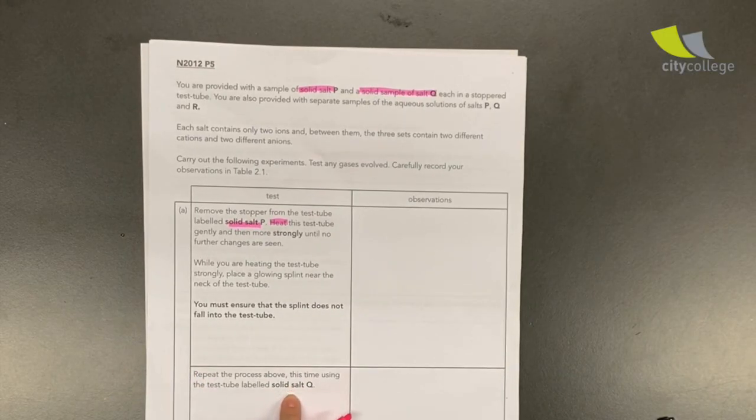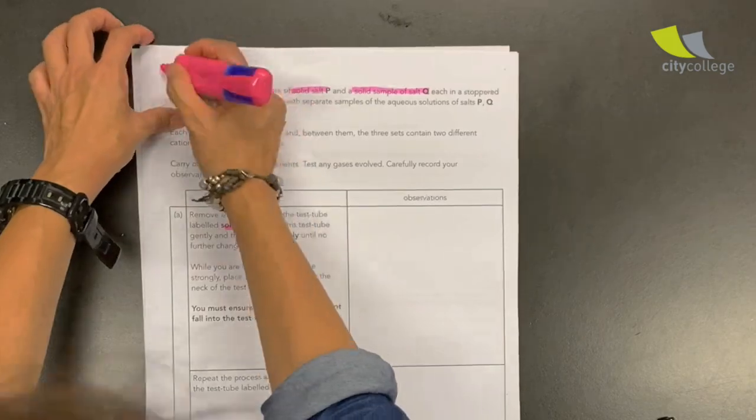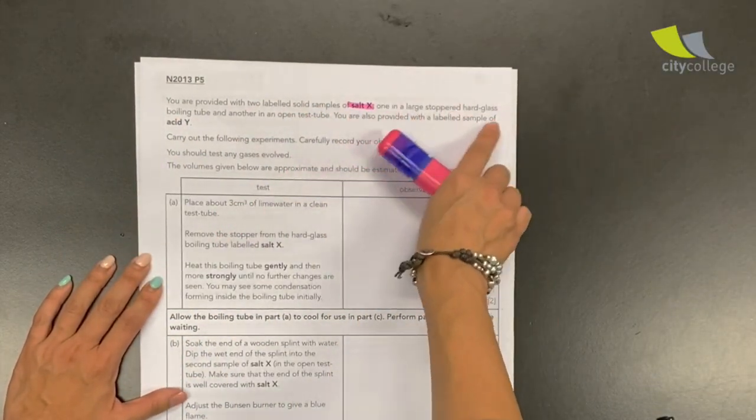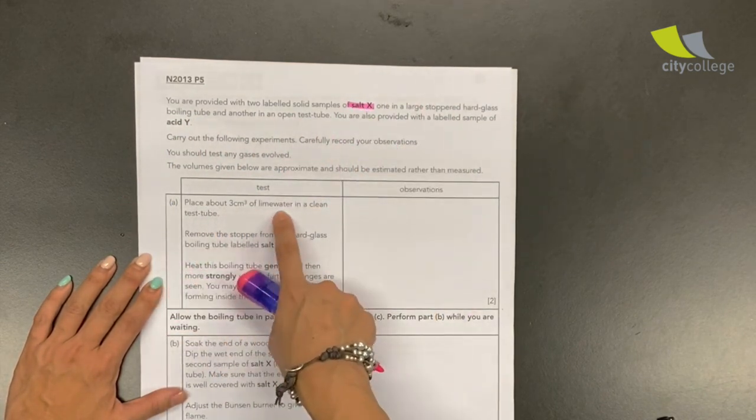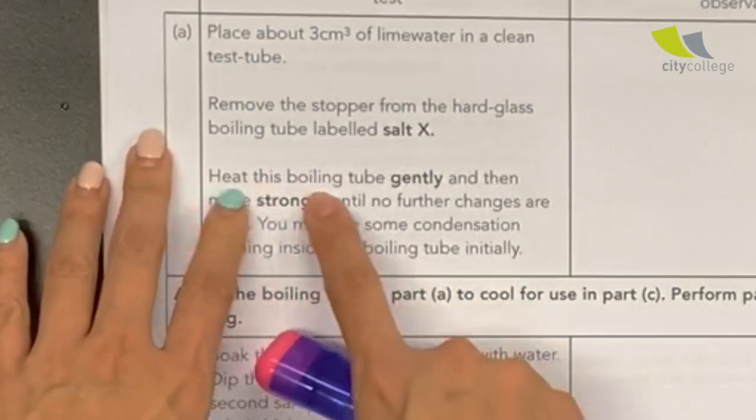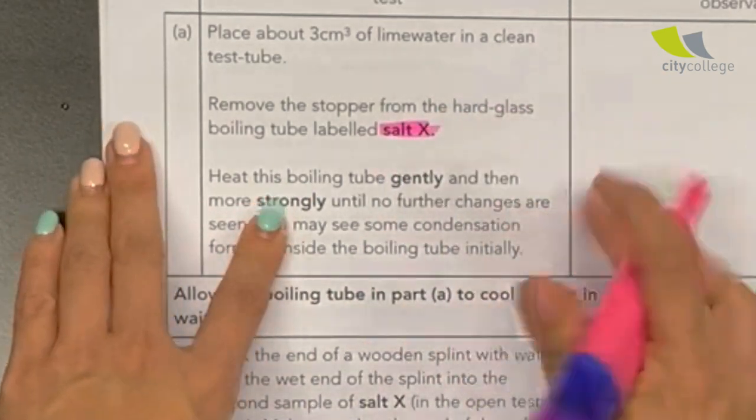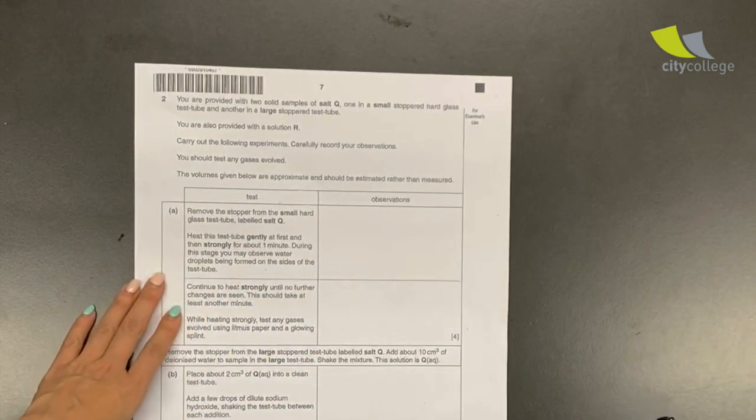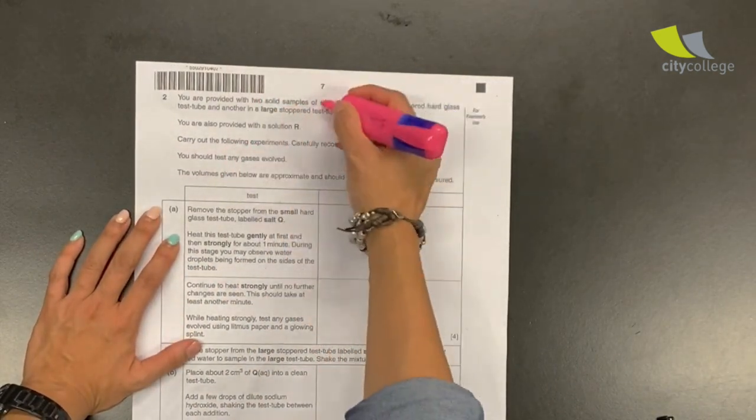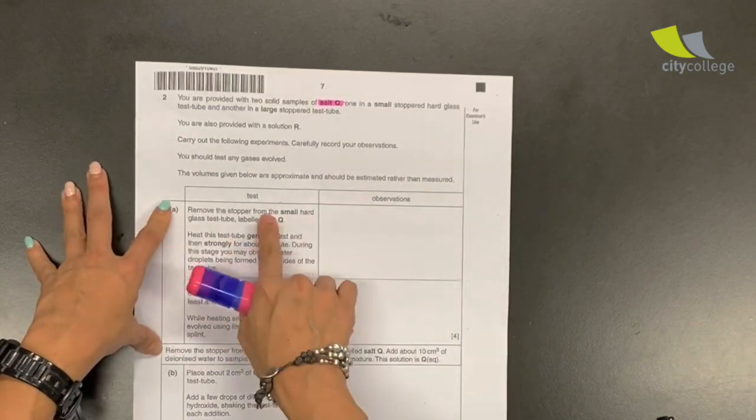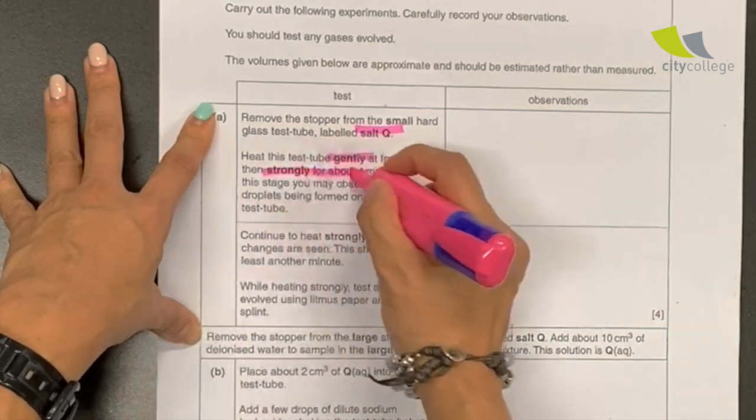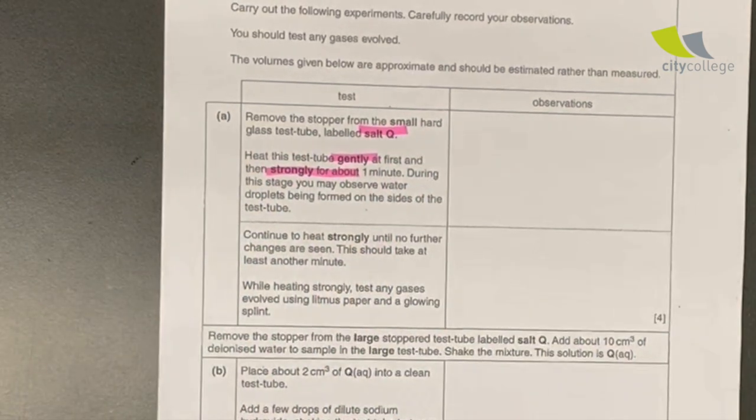Next, coming out, 2013 paper. Heat this boiling tube which contains salt X and you heat it again. Moving on, this is 2014 paper. Heat this test tube gently at first and then strongly for about a minute. Same thing, heating. So are you convinced now that the first part is always about heating?